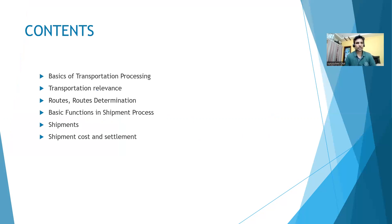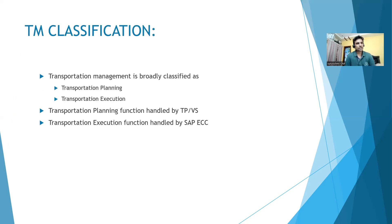I will try to cover one important scenario throughout this process and add more scenarios in the future. Transportation Management is broadly classified into two sections: transportation planning and transportation execution. Planning is handled by TPVS — vehicle scheduling and transportation planning — either as a sub-module or a separate system. Transportation execution is handled by SAP ECC, which is very important for functional consultants.